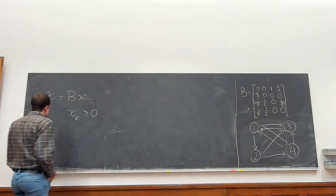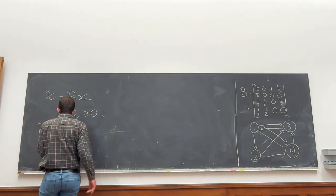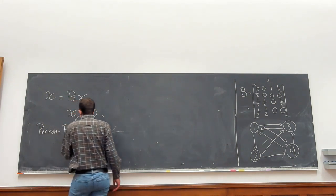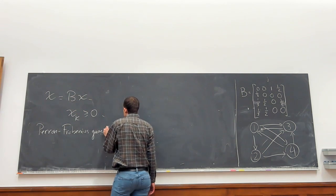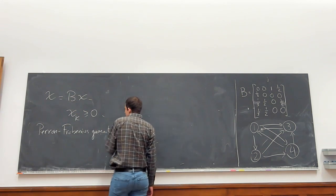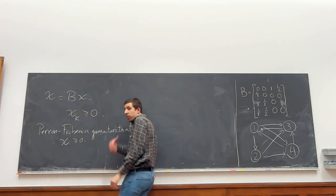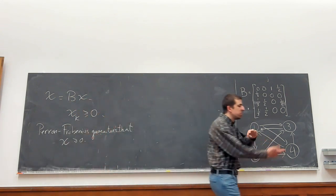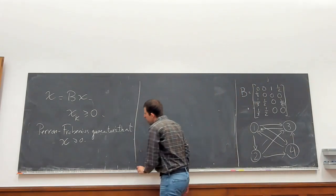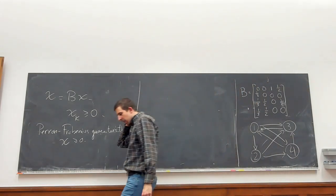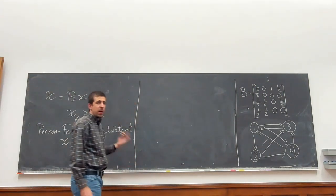We also need the eigenvector x to be non-negative. Now indeed there is something that tells us this. This is known as the Perron-Frobenius theorem. I don't want to get into proving it.